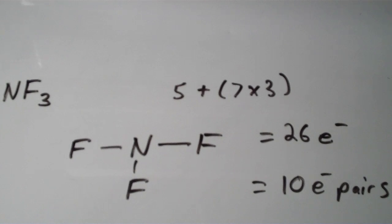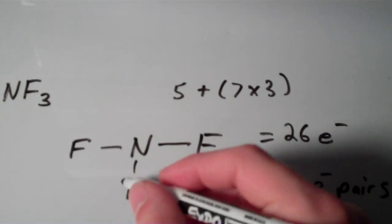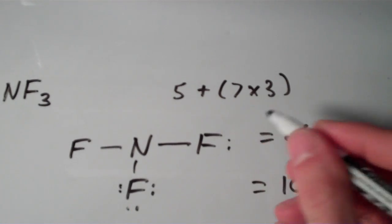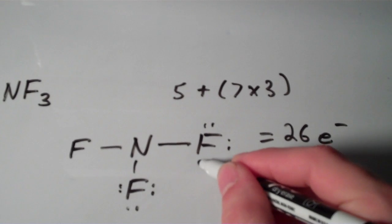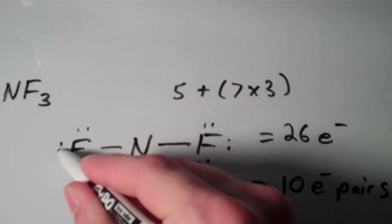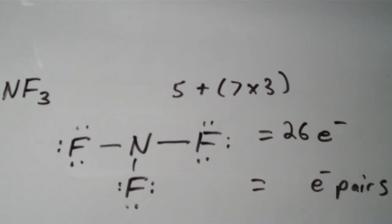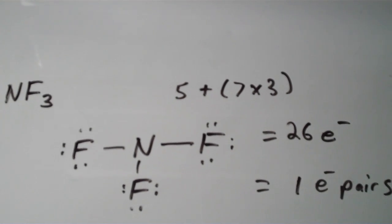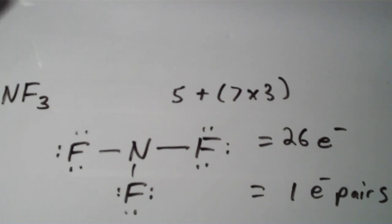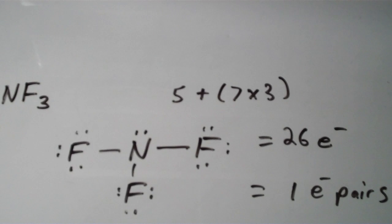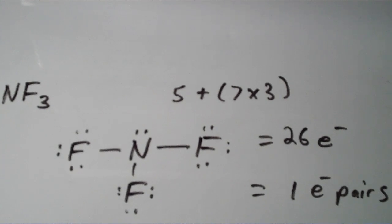Let's count the electron pairs as we use them: one, two, three, four, five, six, seven, eight, nine. Now we're down to just one electron pair. We've given octets to all the fluorines, and the only place for that last lone pair is on the nitrogen. And again, everything has an octet.